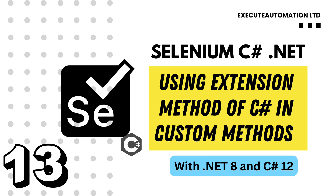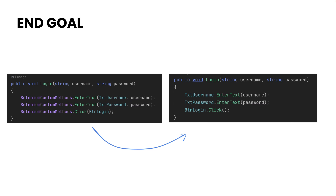Our end goal of this particular lecture is to simplify the code we are writing within our login method. Instead of calling SeleniumCustomMethods.EnterText each time, the goal is to have more readable code like txt_username.EnterText(), txt_password.EnterText(), and btn_login.Click().